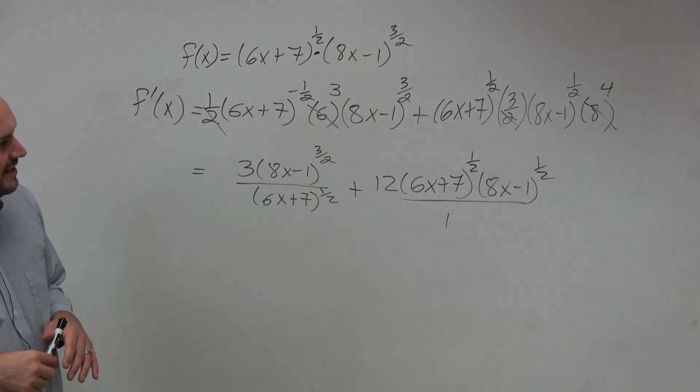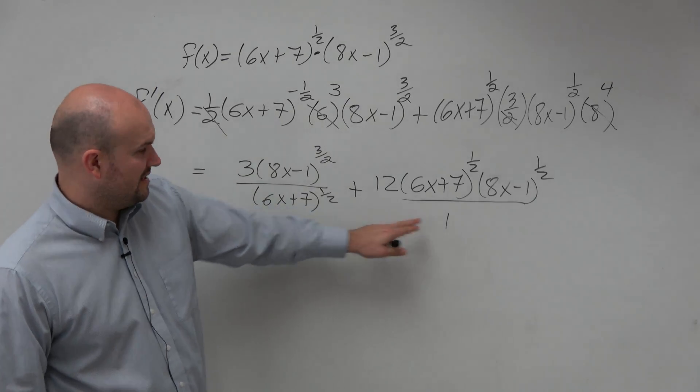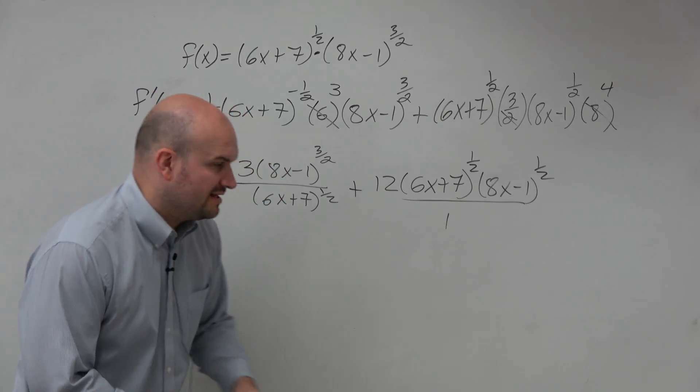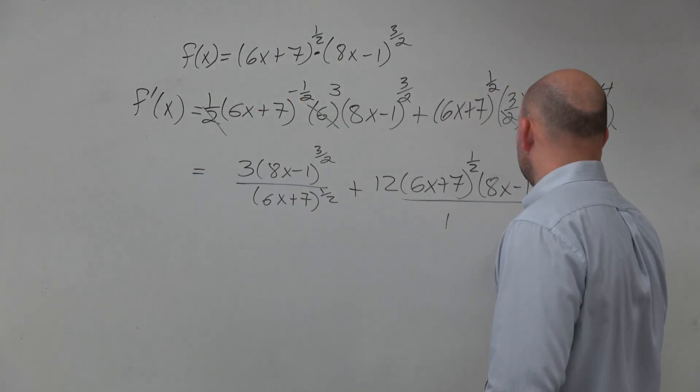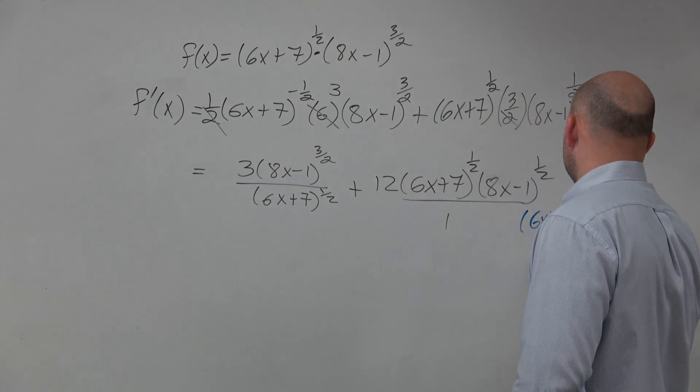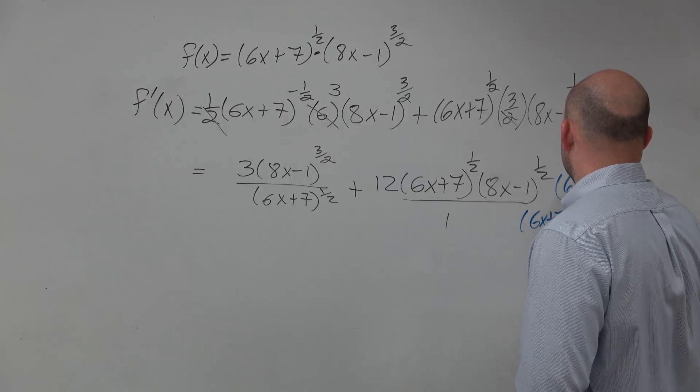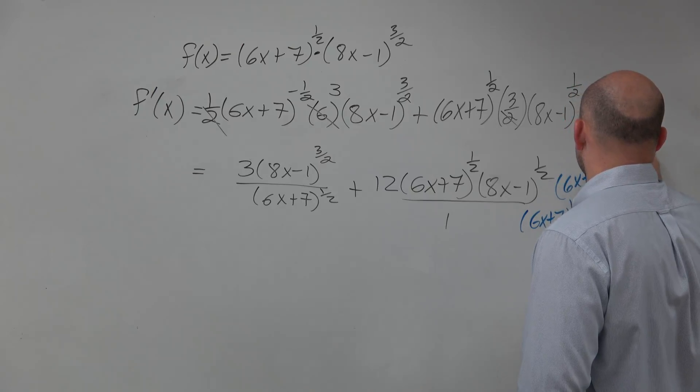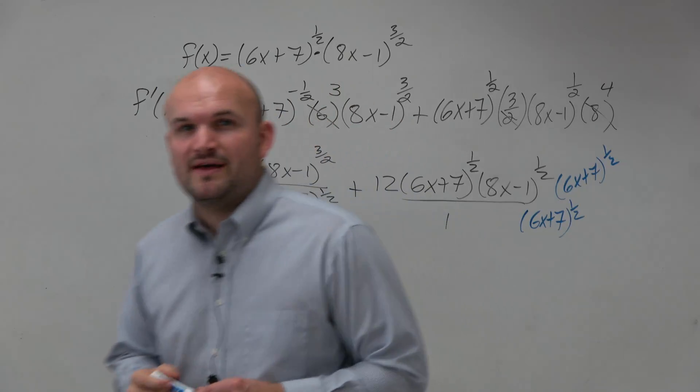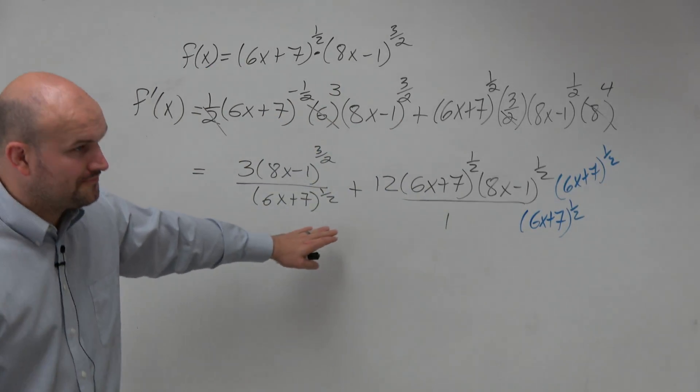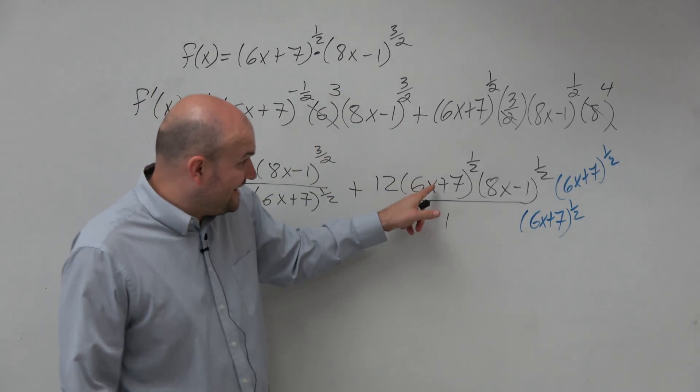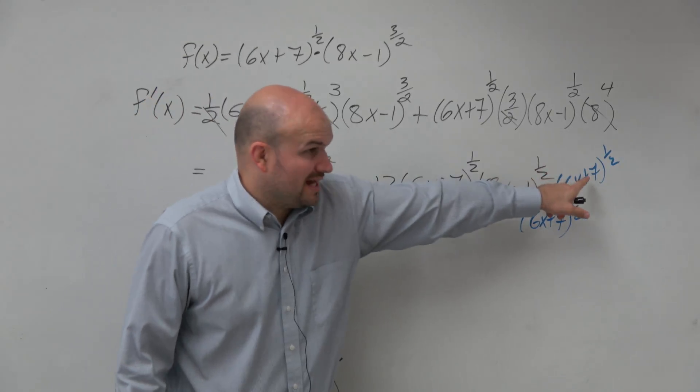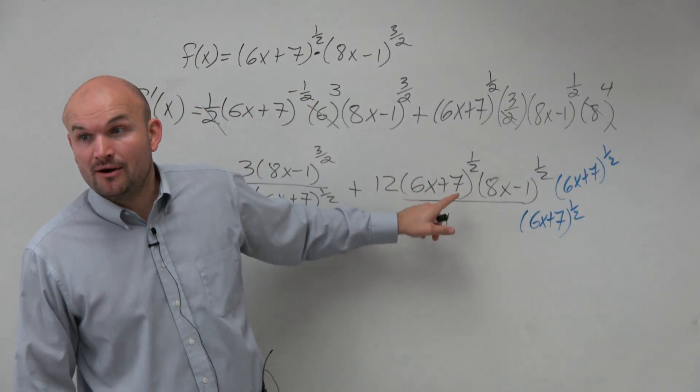Well, we can't combine like terms here unless they have the same denominator. But finding the common denominator is relatively simple. 6x plus 7 raised to the 1/2, right? So we multiply that on both sides.